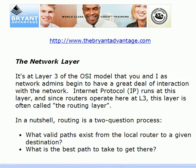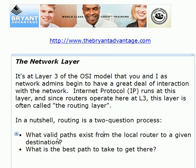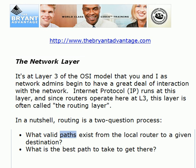The network layer is where network admins actually start having a great deal of interaction with the network. This is where the internet protocol runs, and since routers operate at layer 3, this layer is often called the routing layer. Routing is essentially a two-question process: what valid paths exist from the local router to a given destination, and what is the best path to take to get there? We want more than one path — we want redundancy, so if one path goes down, we've got another. But we also have to decide which is the best path to get our packets to that particular destination.